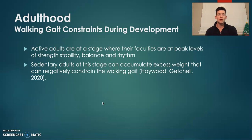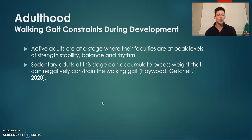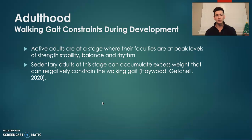Constraints during this adulthood stage: active adults have their faculties at peak levels of strength, stability, balance, and rhythm for adequate walking gait and to conserve energy in each gait cycle. Sedentary individuals can encounter physical constraints, especially with things like excess weight gain, which can prohibit them from being able to have an adequate walking gait.